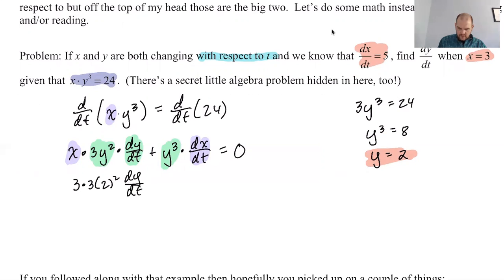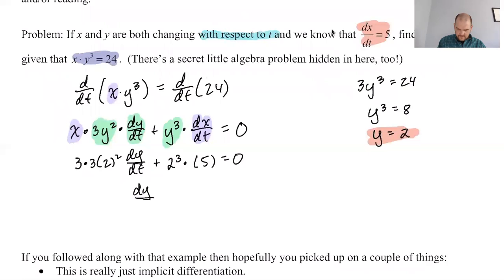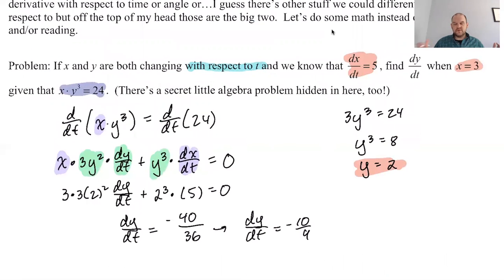So everything in kind of orange is going to be substituted at this point. So I will get 3 times 3 times 2 squared dy/dt, plus 2 cubed dx/dt was given as 5 equals 0. So we have this. And then dy/dt is equal to what? Negative 40. So it's 8 times 5, and then subtract it. So negative 40 divided by 4 times 3 times 3, so 36. So I'm going to say dy/dt is negative 10 over 9. There are no units in this problem. Units are super important when you do these, but in this case, there's just no units at all. So I would say that this is my final answer.